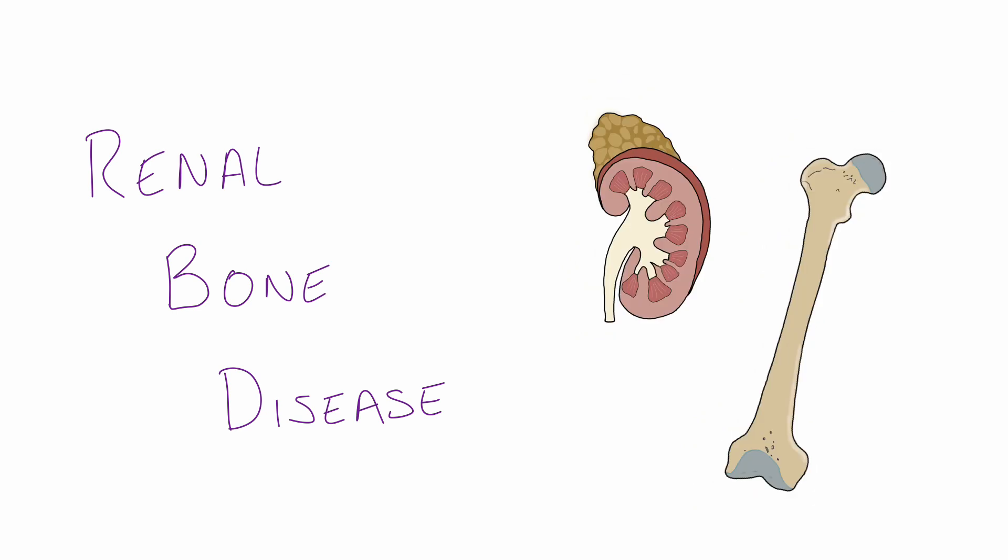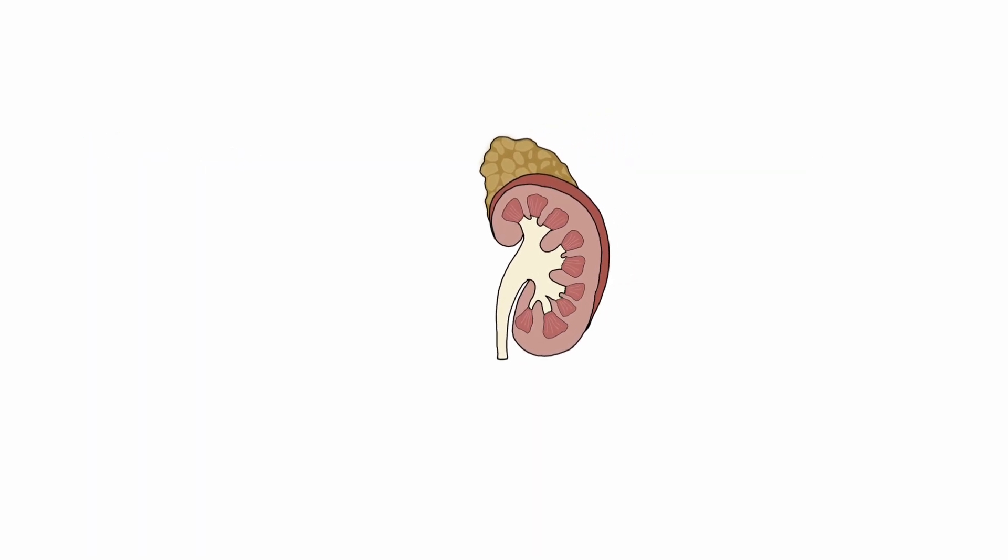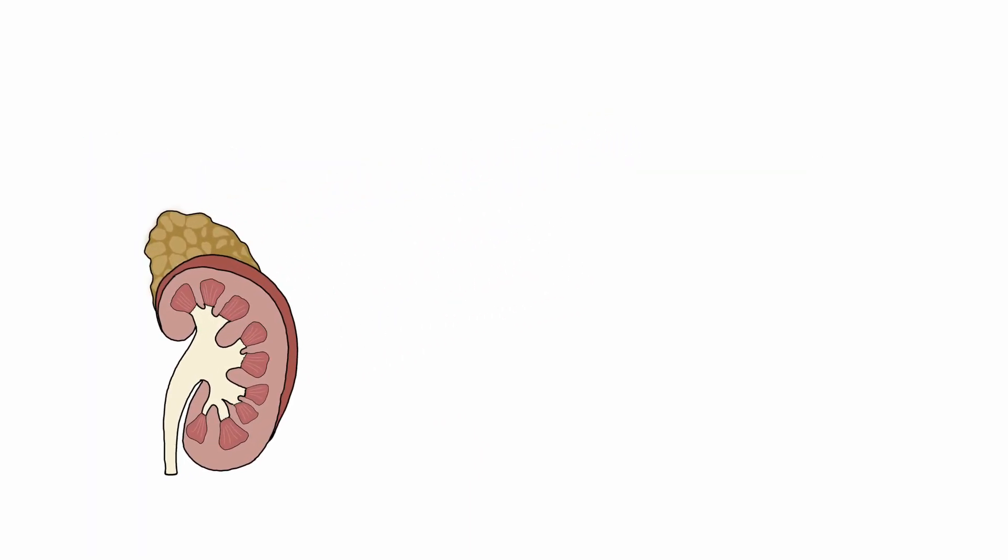Hi everybody, welcome back to another student med video. Today we're discussing renal bone disease, also called mineral bone disease, which occurs when the kidneys fail to maintain the correct levels of minerals and hormones in the blood. This causes bones to become softer and sometimes deformed. Renal bone disease often occurs secondary